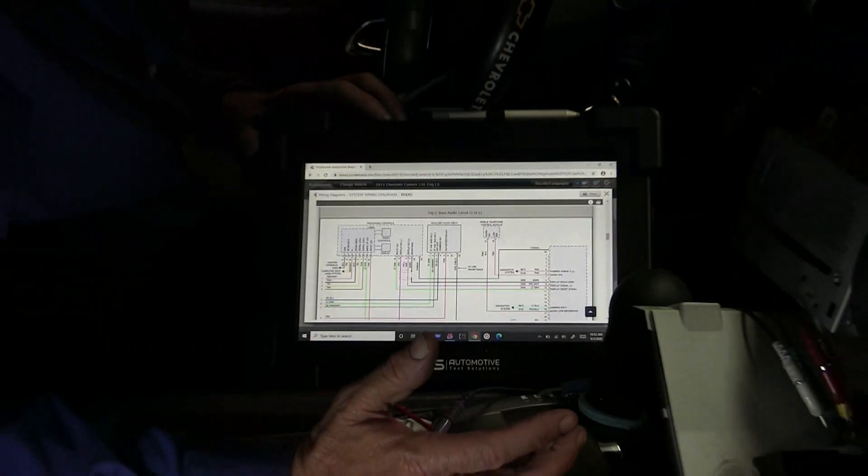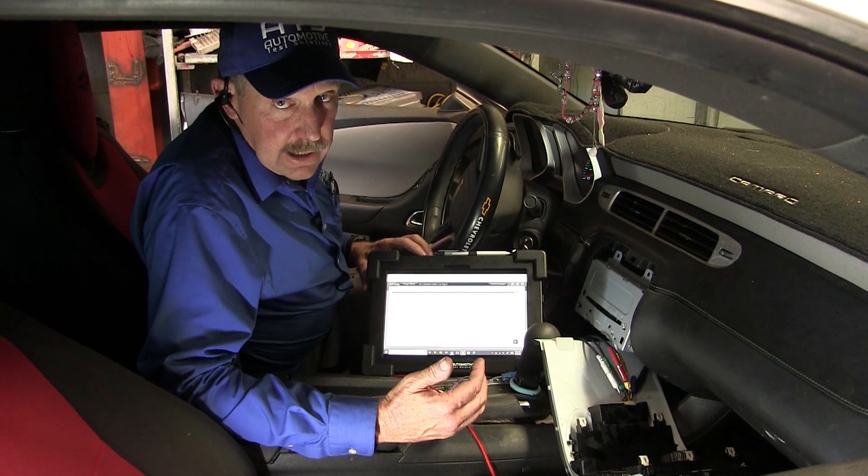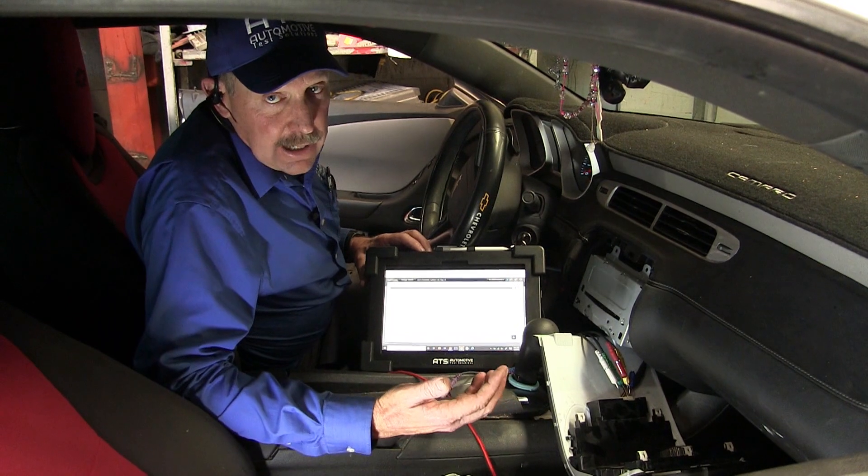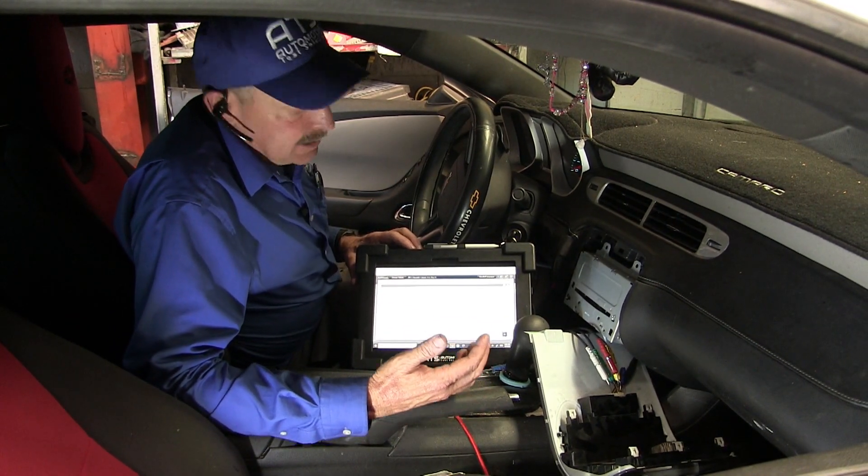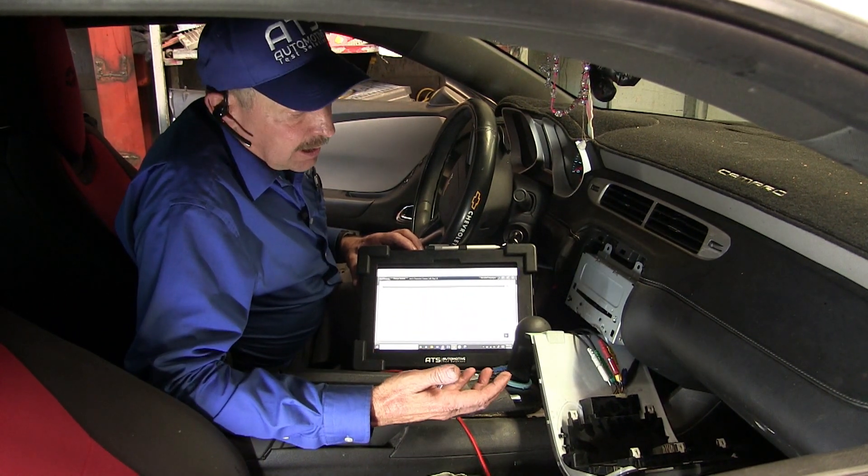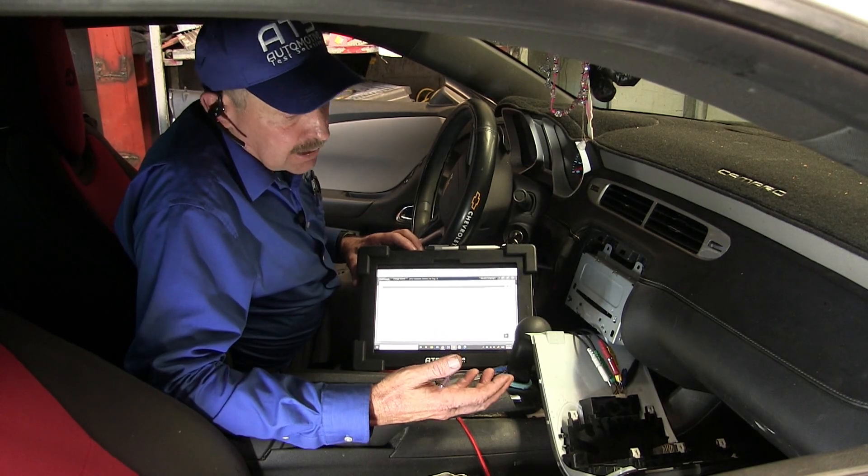Now the enable wire on these systems works differently. When it's high, the CAN is off. When that enable wire drops, the CAN starts to talk. And that enable wire is controlled from the radio. So the radio, when it sees your key go in, it wakes up the control head so you can control your HVAC functions and your radio.